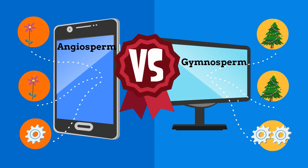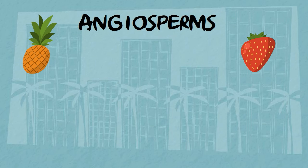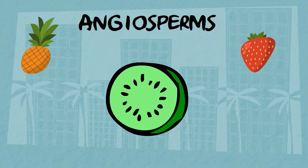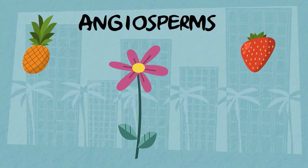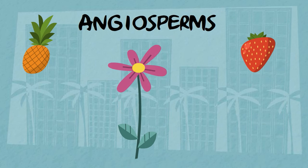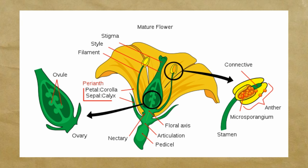Angiosperms are unique because they produce a seed encased in a fruit. The seed develops in the ovary and the ovary is encased within the plant's flowers. Angiosperms are flowering plants. A typical flower, but not all flowers, has a male portion called the stamen.